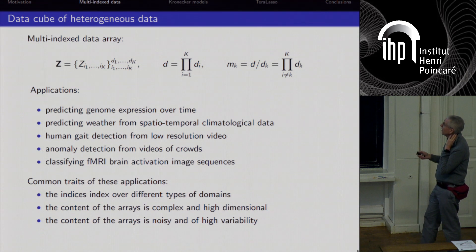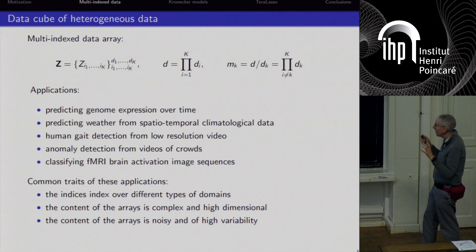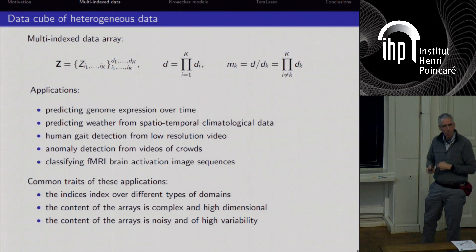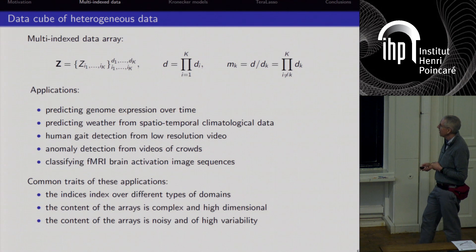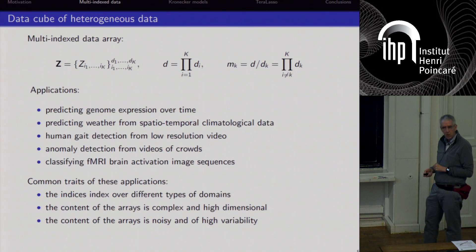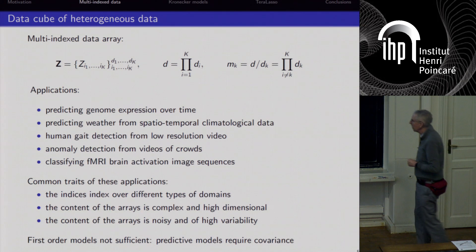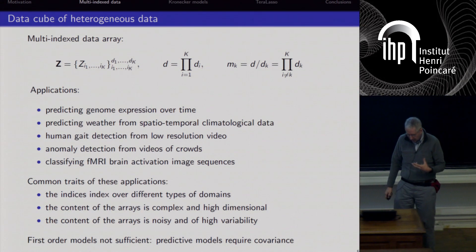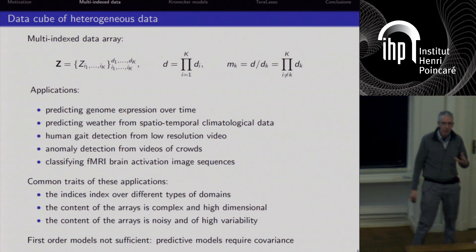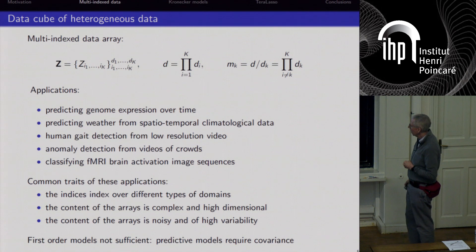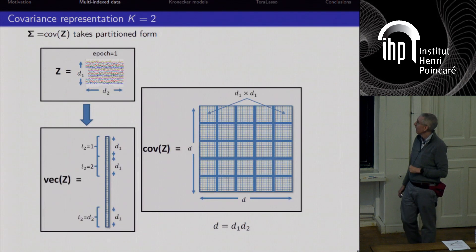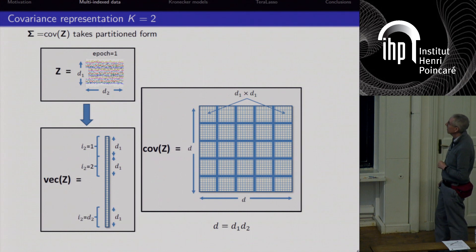The common traits of these spatiotemporal imaging problems are high dimensionality, complex arrays with lots of noise and high variability, and domains of different types that should be considered separately. Importantly, we're developing predictive models — we want to predict ahead, so first-order models are insufficient. We need correlation structure to do prediction, which is why we focus on covariance in this context.